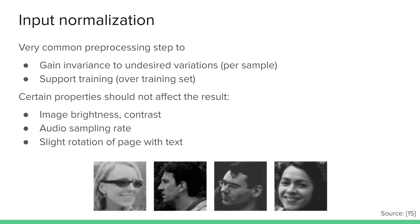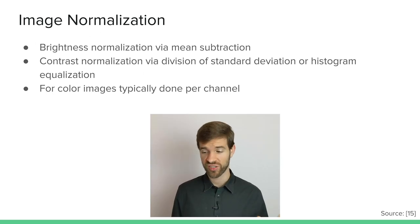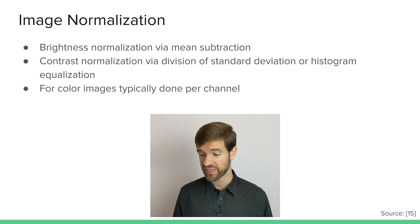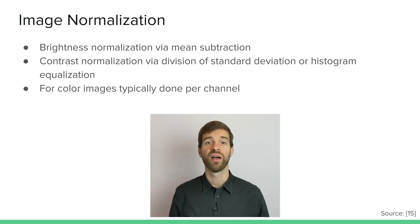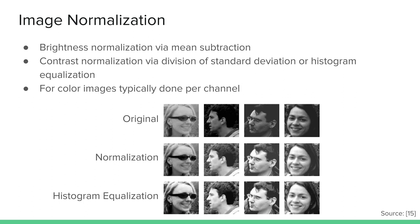Here you can see an example of people who are not normalized, and once we normalize for brightness and contrast they all look much more homogeneous. For image normalization: brightness normalization can be done by mean subtraction, contrast normalization by division of the standard deviation, or histogram equalization to even out the histogram. For color images, you typically do this per channel. Pre-processing can even be essential to make your network work at all.